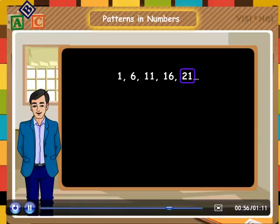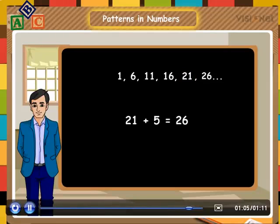It is very easy. It can be obtained by adding 5 to it. That is, 21 plus 5 is equal to 26.